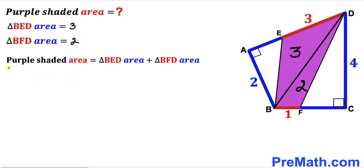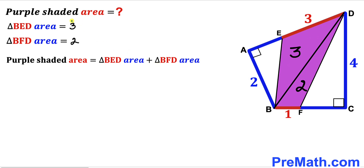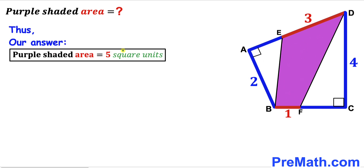Here's our final step. We calculate the area of the purple shaded quadrilateral by recalling our equation: quadrilateral area equals triangle BED area plus triangle BFD area. We already calculated triangle BED as 3 and triangle BFD as 2, so we have 3 plus 2, which gives us 5 square units — the area of this purple shaded quadrilateral.